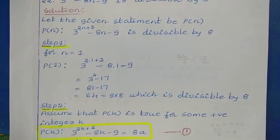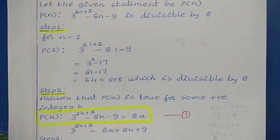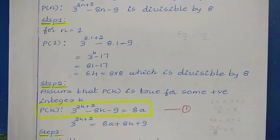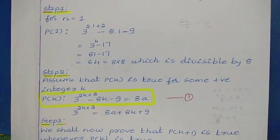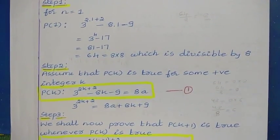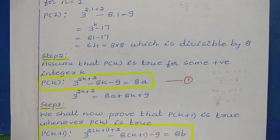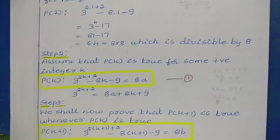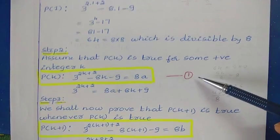Here we take some positive integer k and we assume that the given statement is true for that integer. To write the statement in the form of P of k, wherever you have n, replace that with the value k. So we have P of k: 3 to the power 2k plus 2, minus 8k minus 9, is equal to 8a. Let us say that this is statement 1.